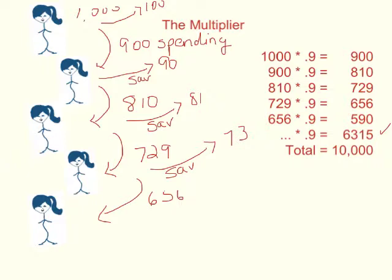So the total amount that gets spent, if you add up the original $1,000, and then we've got $900 of that, $810 of that, $729 of that, $656 of that, and then the remainder $6,315. All of that added together, you come up with $10,000 in this case.